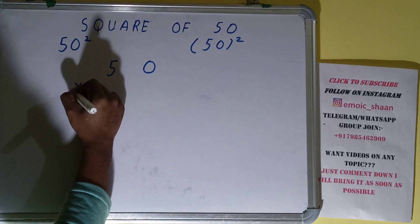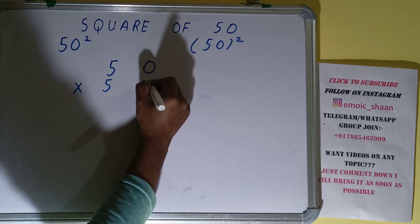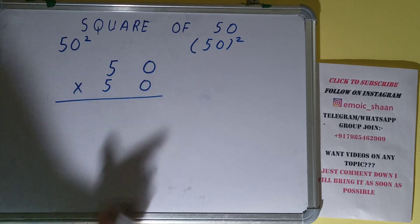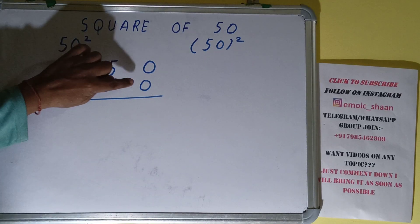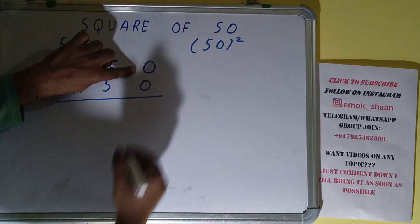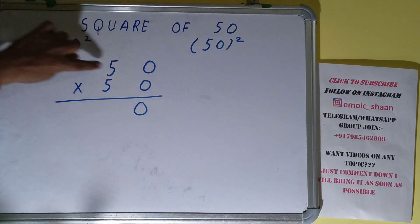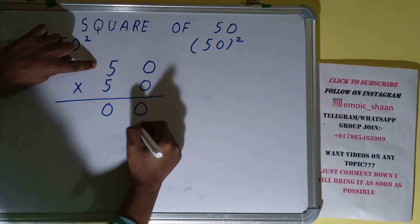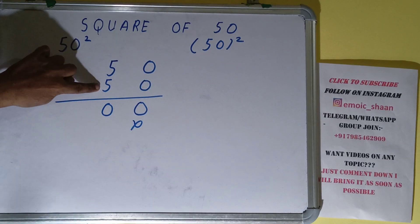Let's do the normal multiplication. Let's start with this 0. 0 into 0 is 0, 0 into 5 is again 0. We are done with this. Now with this 5: 5 into 0 is 0, 5 into 5 is 25.